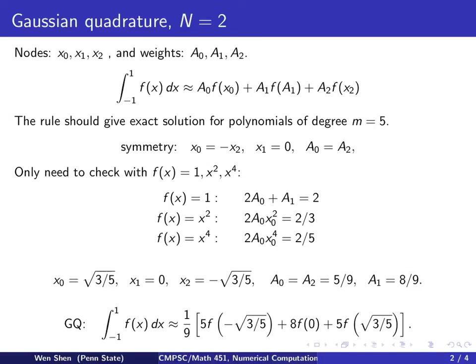And this Gaussian quadrature is exact for all polynomials of degree less than equal to 5. And that is a very high degree, especially we only used 3 points.